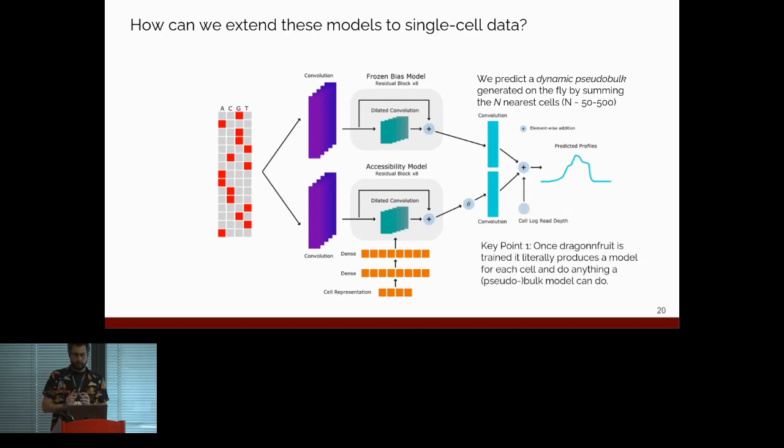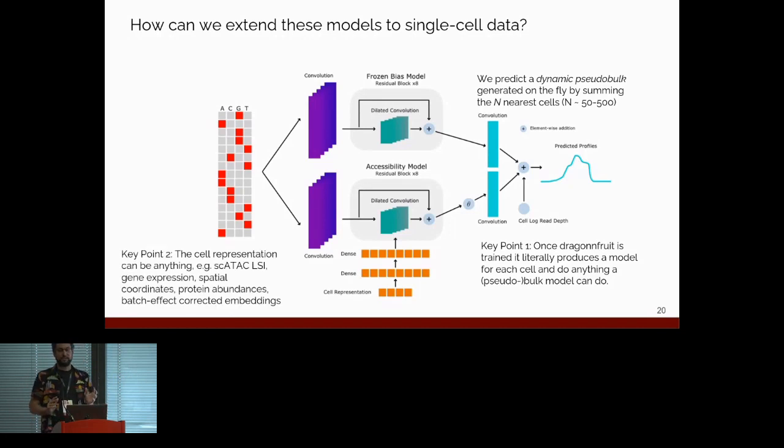So, there are two key points about this model. The first is that what this allows you to do is any analysis you are currently doing at bulk resolution, you can now trivially extend to single-cell resolution, because de facto, you have one model per cell. You are using your cell representation to create one model for each cell, so anything you can do at bulk resolution, you can do at single-cell resolution. The second is that this cell representation is incredibly general. It can be derived from the same ATAC-seq experiment, if you want. If you have multimodal data, it can be gene expression, right? If you have spatial coordinates, you know, protein concentrations, you can use whatever you want. It just needs to be some vector representation of your cell that you trust.